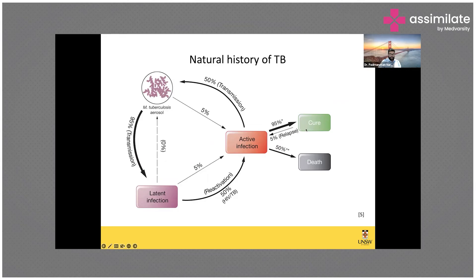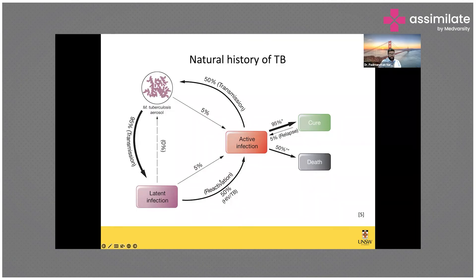Then why do we still have so much TB in the world? Among those with active TB disease, 50 percent — particularly those with sputum-positive or laryngeal TB — can transmit the infection. Also, the transition from latent to active TB disease changes drastically in immunocompromised states: taking immunosuppressive drugs for arthritis, having HIV or diabetes, smoking, or indoor air pollution that damages the lungs all significantly increase the chance of progression from latent to active disease.